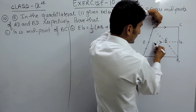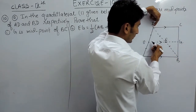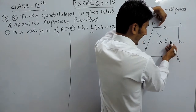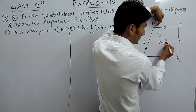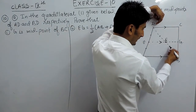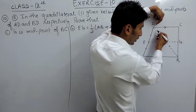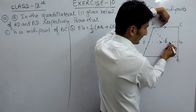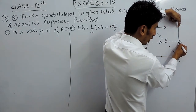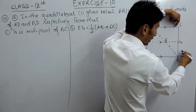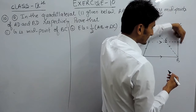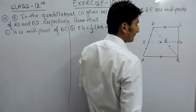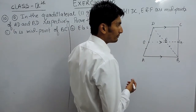In triangle DBC, we have proved that EF is parallel to DC. So clearly FG must also be parallel to DC. F is the midpoint of this side, and according to the midpoint theorem, if we draw a line parallel to the third side from the midpoint of one side, it must also meet the midpoint of the opposite side. So clearly G is the midpoint of BC.